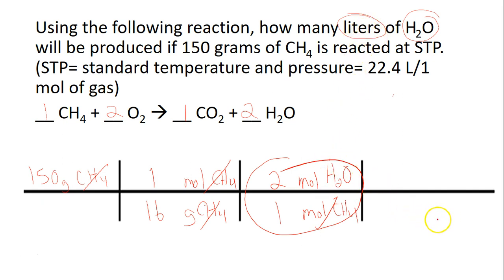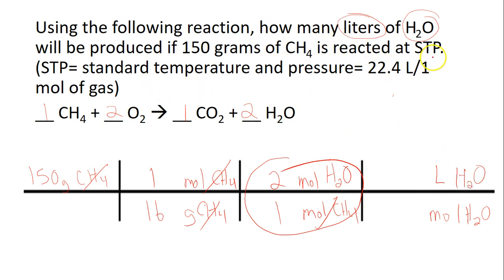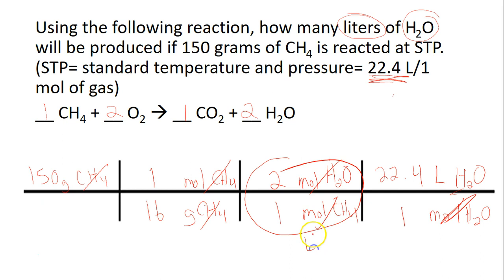But we're looking for liters, so I've got to keep going. I bring moles of H2O to the bottom. This time, instead of grams, we're going to liters of H2O. Since this problem says we're at standard temperature and pressure, we use the conversion: 1 mole of H2O is 22.4 liters. Moles of H2O cancels out, leaving liters of water. We multiply the top and divide by the bottom, and the answer is 420 liters of H2O. We check sig figs — we've only got two digits, so two down here. That's our answer.